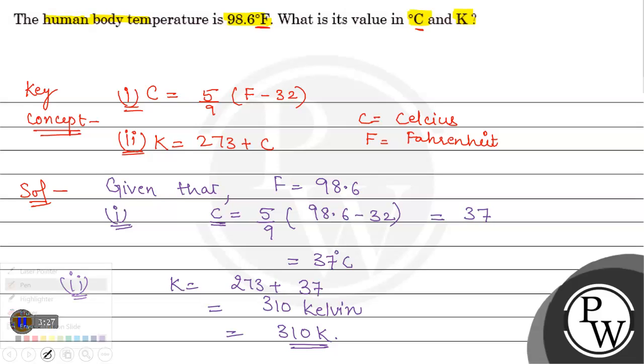This is the solution to this question. The value in Celsius is 37 degrees and in Kelvin it is 310 Kelvin. I hope you understand it well. All the best.